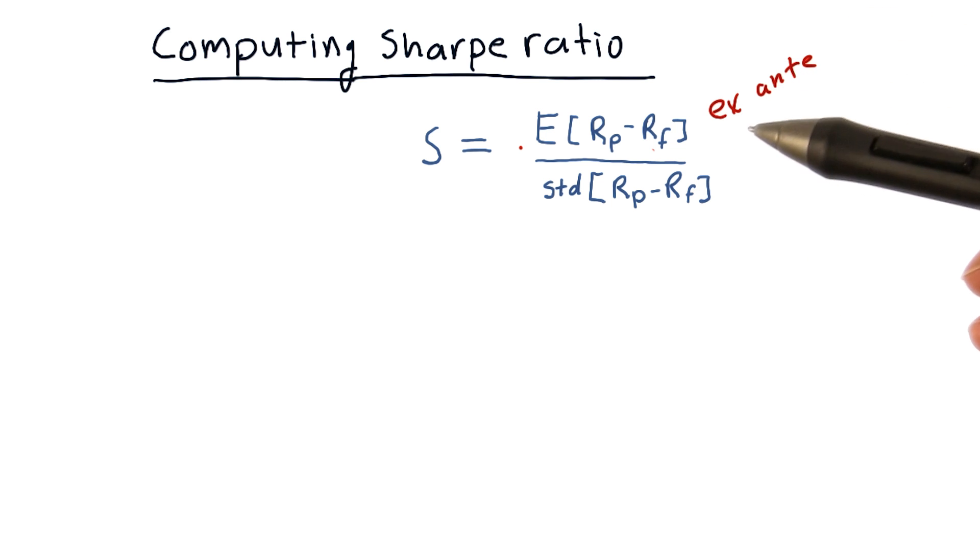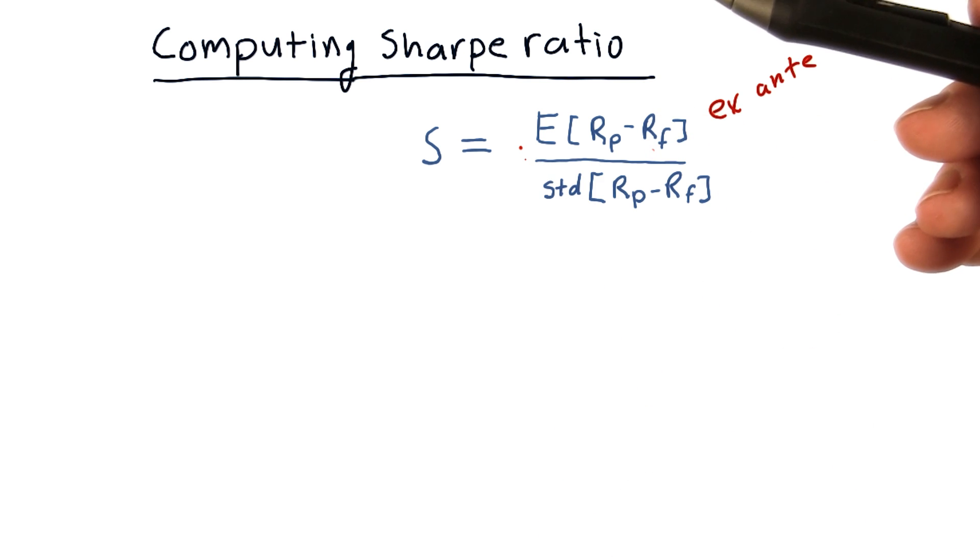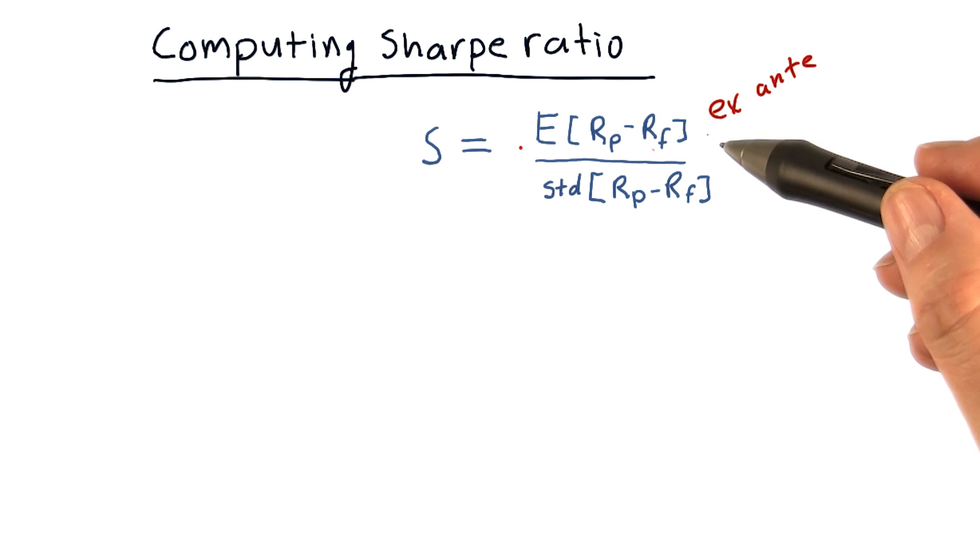This is the ex-ante formulation, meaning, because we're using expected, it's a forward-looking measure of what the Sharpe Ratio should be.